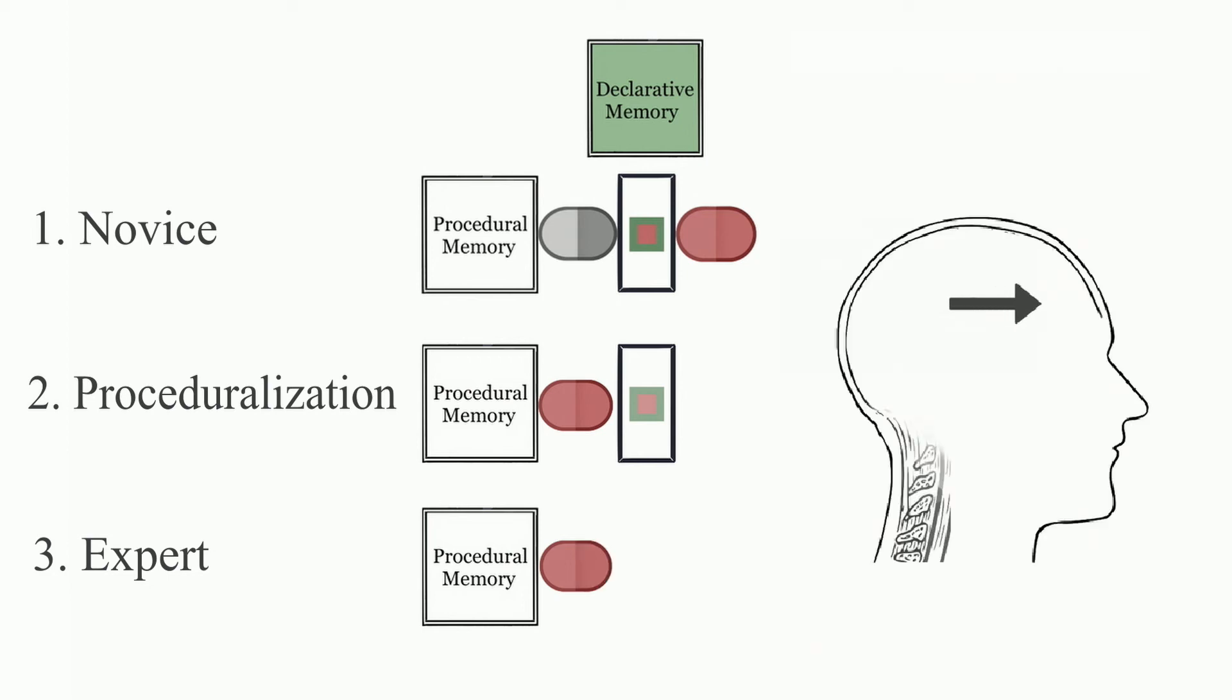Our claim is that metacognitive skills can also go through this three-stage skill acquisition framework. Metacognitive control can also begin as declarative knowledge, such as instructions for emotional regulation or focus. Metacognitive instructions can also be acted out by production rules. When practiced, these production rules skip the knowledge retrieval to become faster, more automatic, and more efficient.